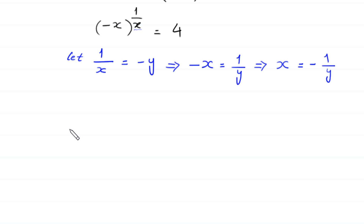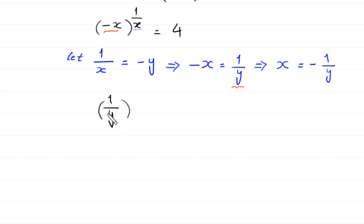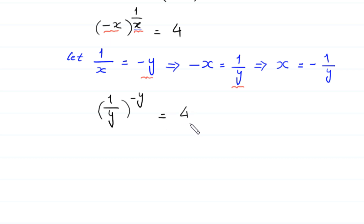Now, in this equation we substitute the value of negative x, which is 1 over y, and we substitute the value of 1 over x, which is negative y. So we put here: 1 over y to the power negative y is equal to 4.